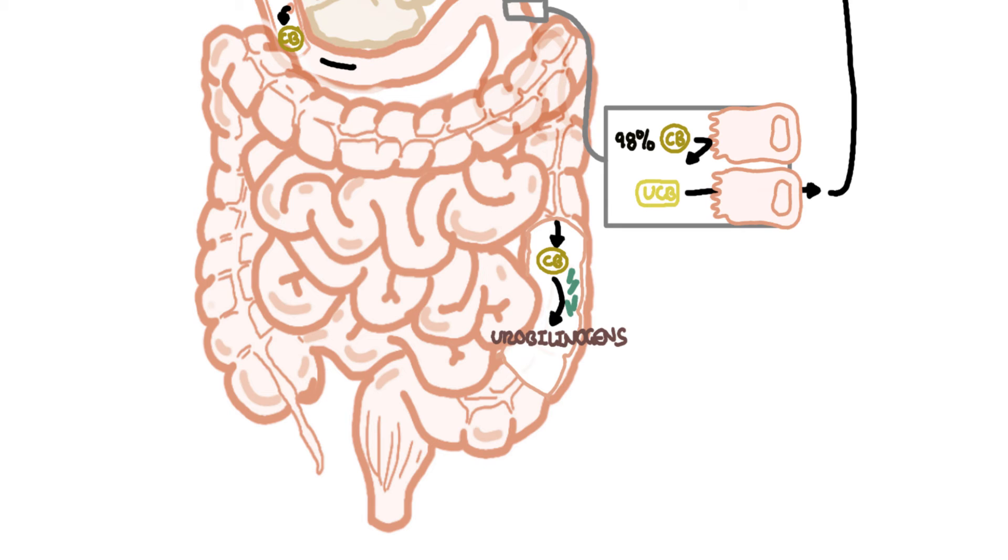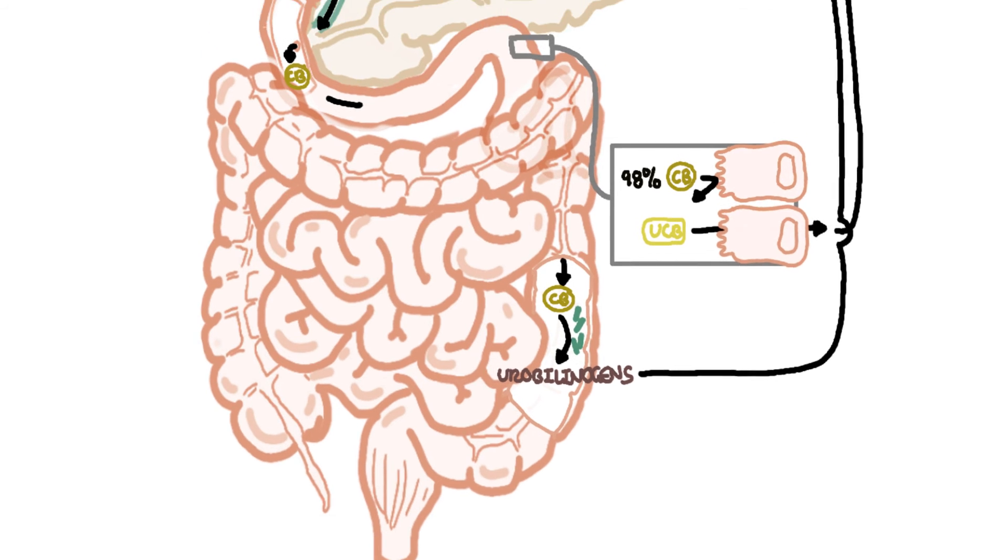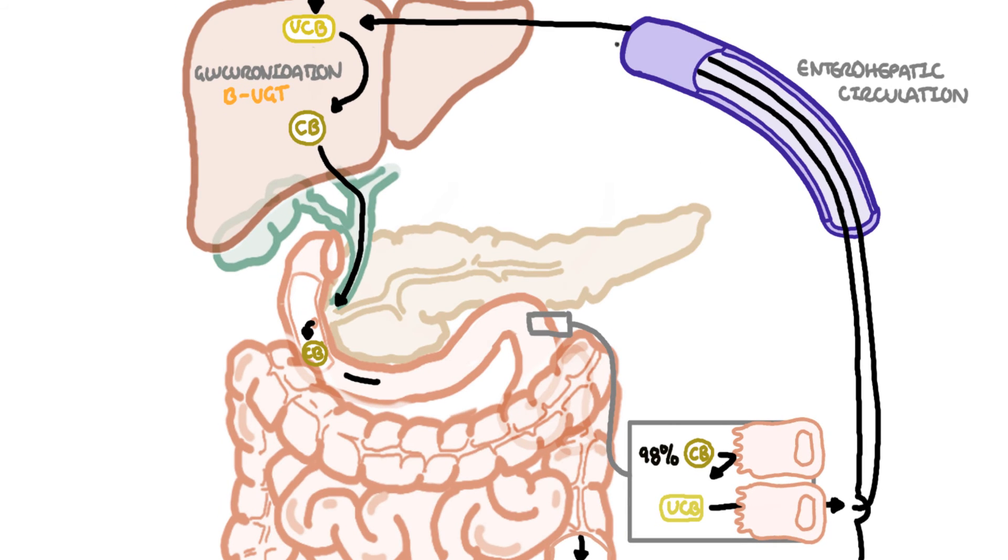Urobilinogens are partly absorbed in the bowel and undergo again enterohepatic circulation where the urobilinogen will enter the liver to get processed again. The fraction that is actually not cleared by the liver will enter the general circulation and is partly excreted in urine.